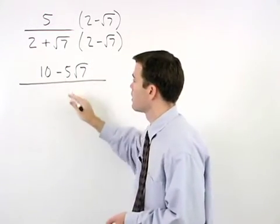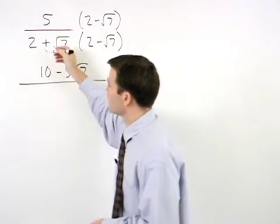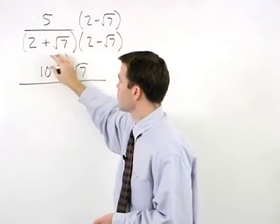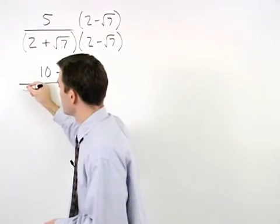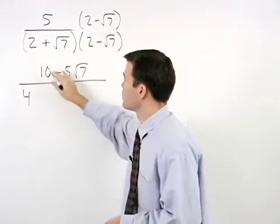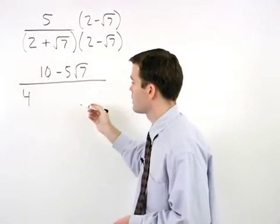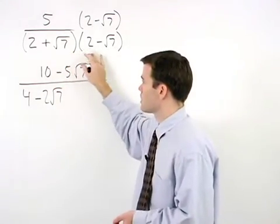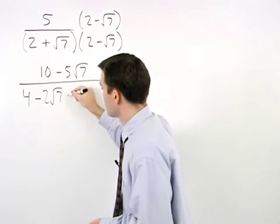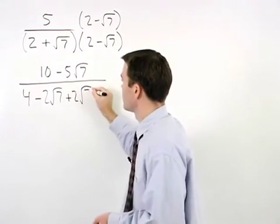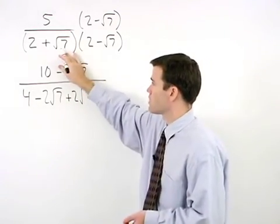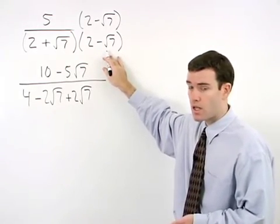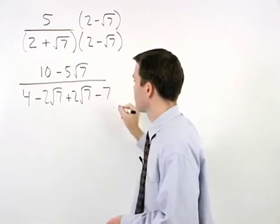In the denominator, notice that we must FOIL. 2 times 2 is 4. 2 times negative root 7 is negative 2 root 7. Positive root 7 times 2 is positive 2 root 7. And positive root 7 times negative root 7 is negative root 49, or negative 7.